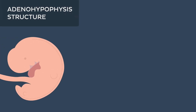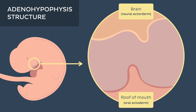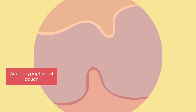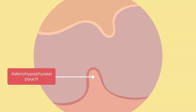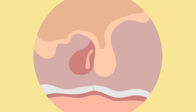The embryological origin of the adenohypophysis is from an outpouching of the roof of the oral cavity known as the adenohypophysial pouch or Rathke's pouch. It is derived from oral ectoderm, meaning it has a different origin from most of the rest of the nervous system.